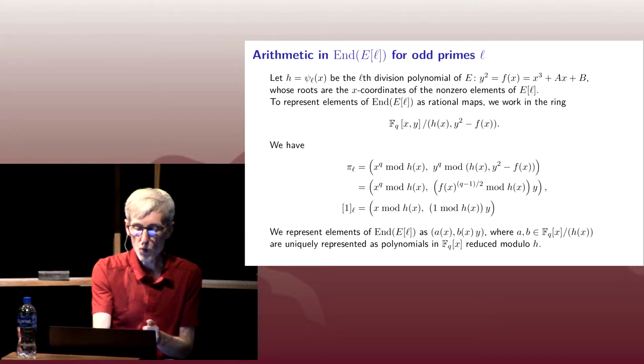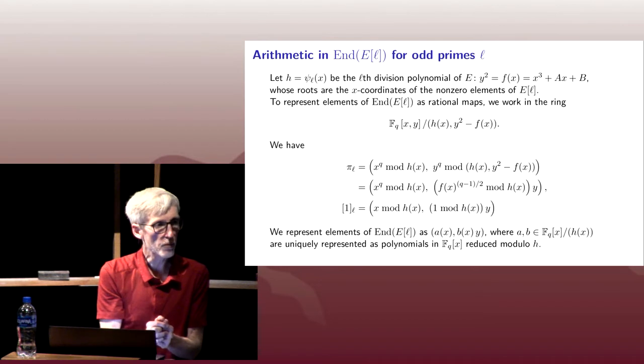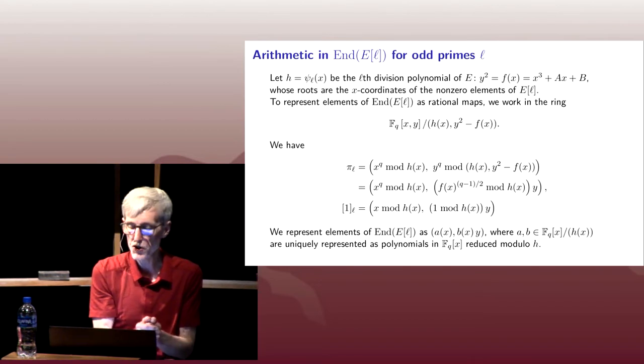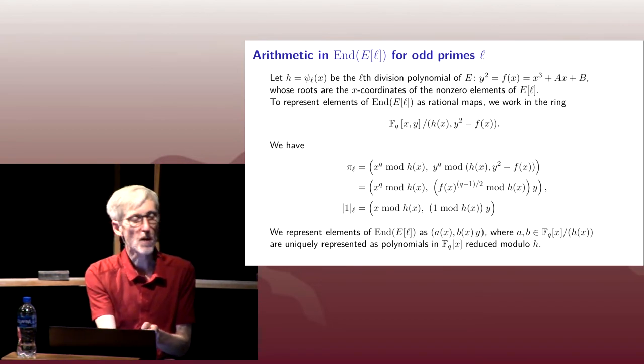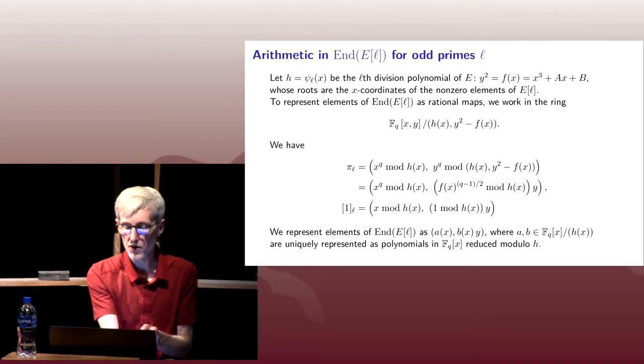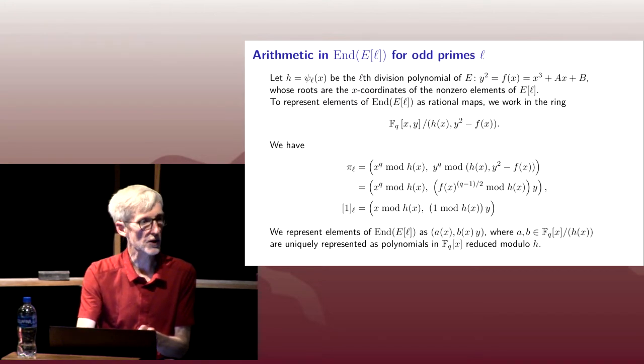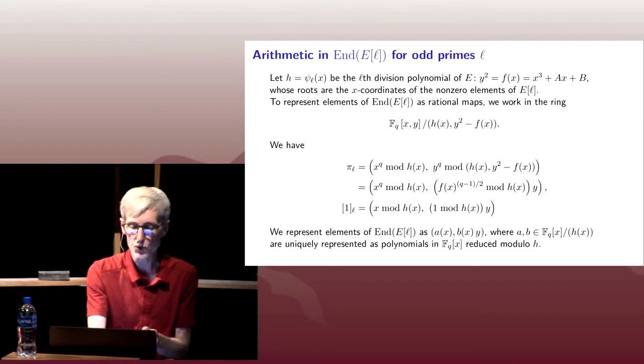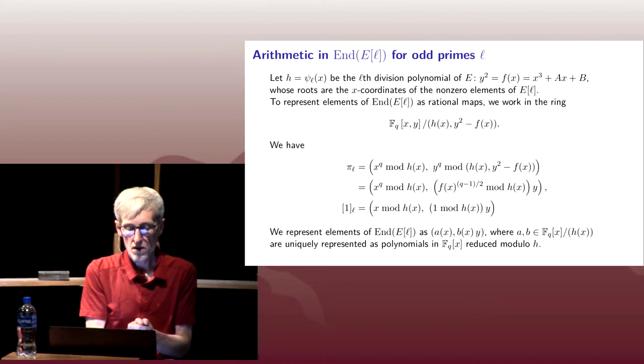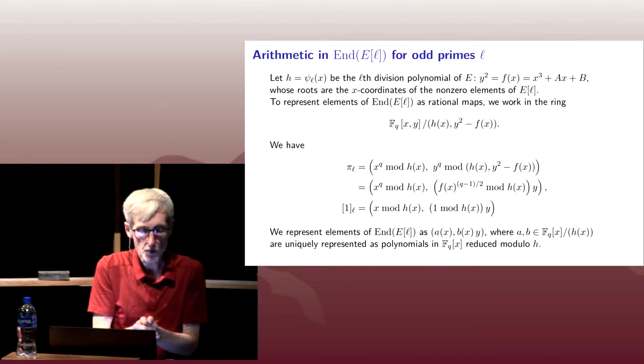We can reduce our F(X)^((Q-1)/2) mod H. So we wind up with, notice the form of our Frobenius anamorphism looks like some polynomial in X, which has degree less than H, comma, another polynomial in X, which has degree less than H, and just a single Y sitting there. Notice we can always get things down to just a single Y because we have Y^2 = F(X) that we can use to kill any higher powers. So that's Frobenius anamorphism.